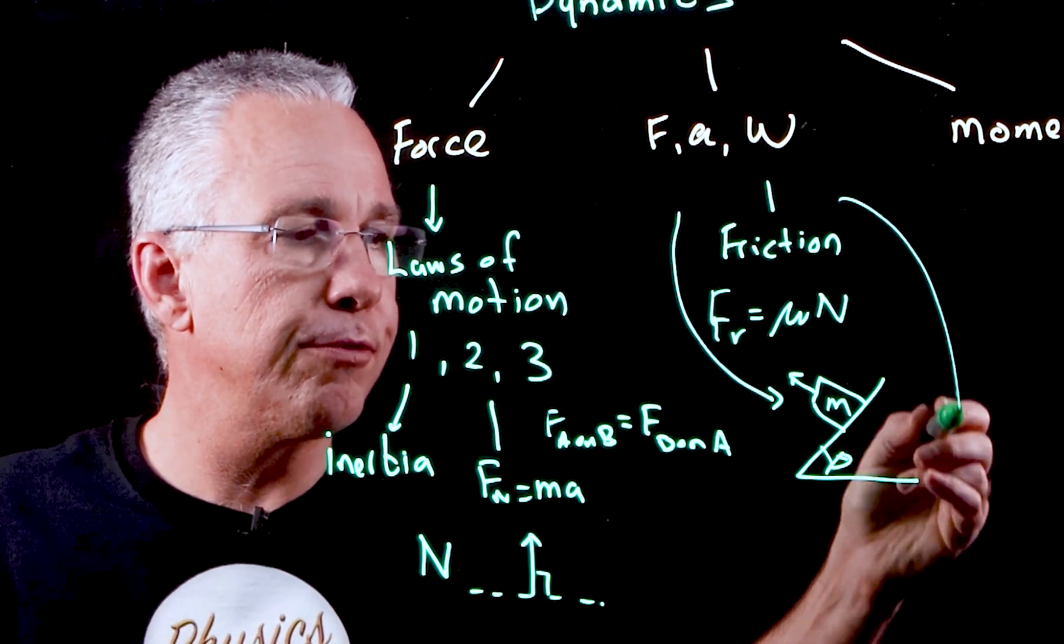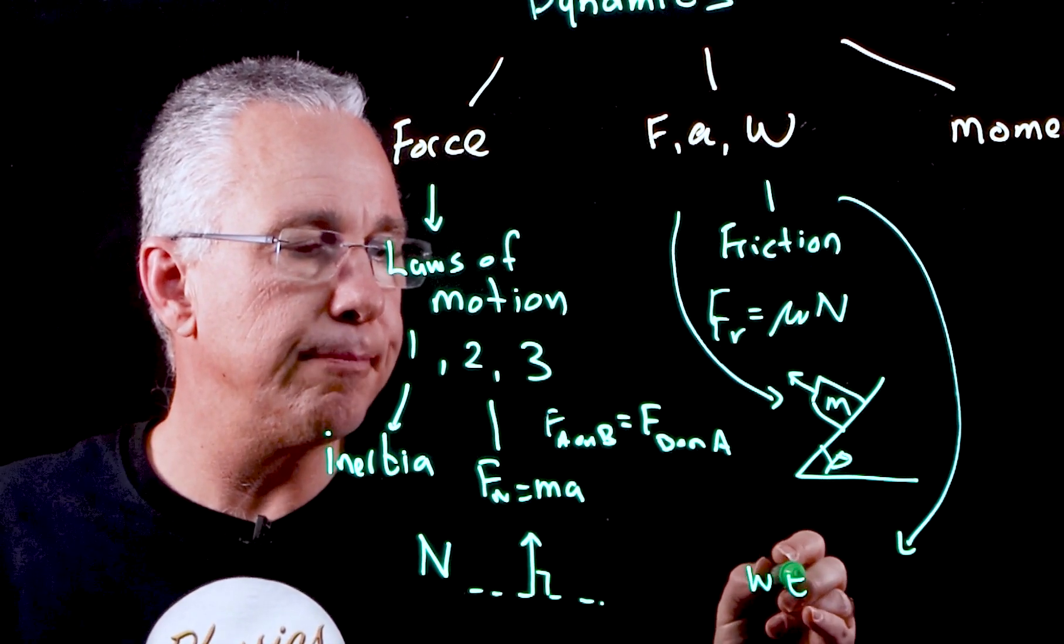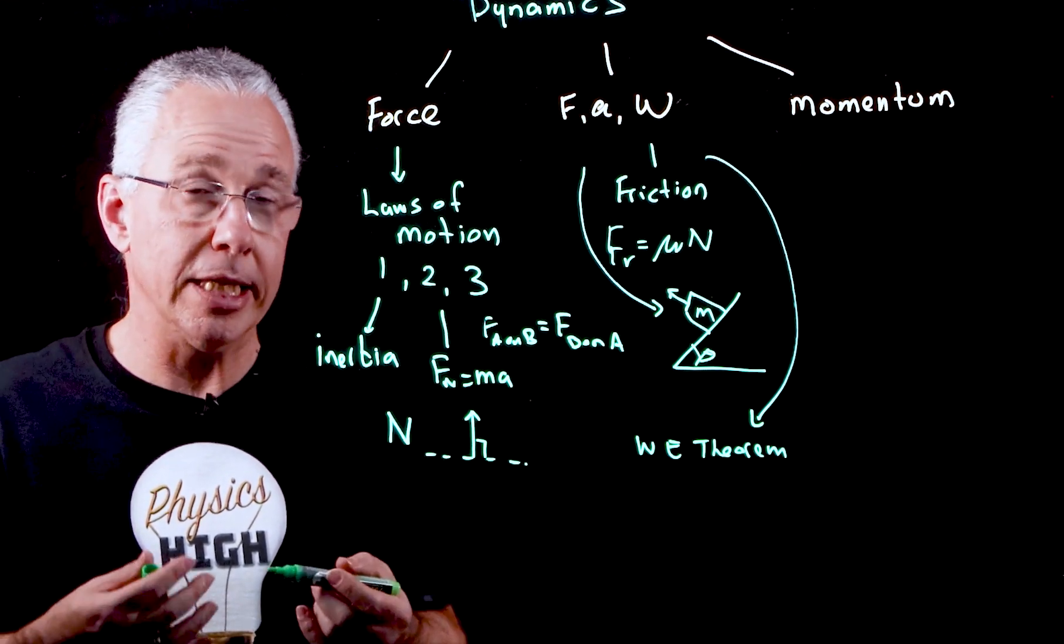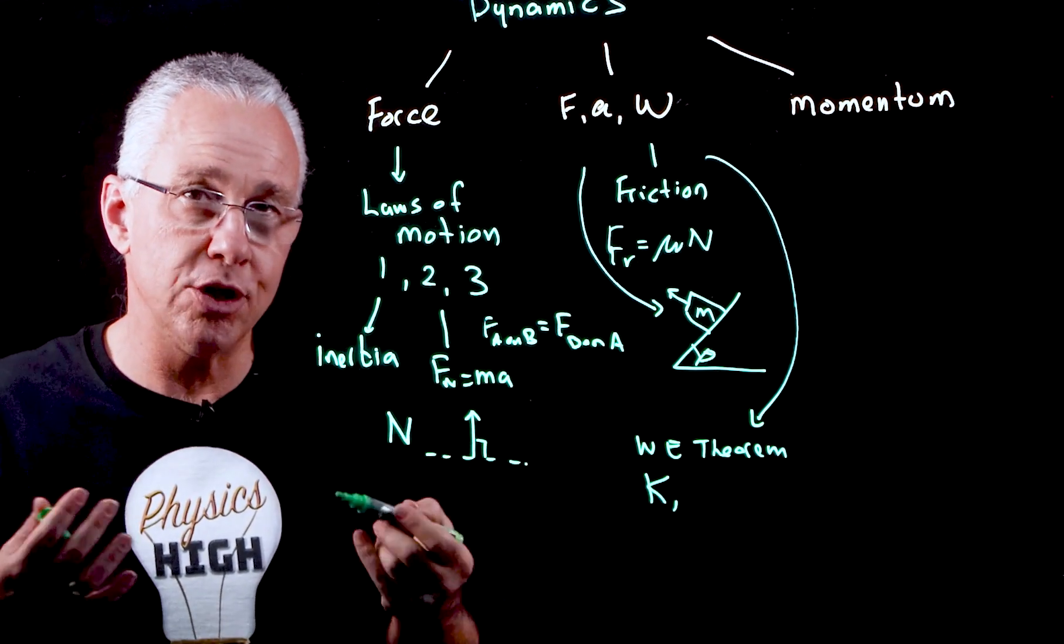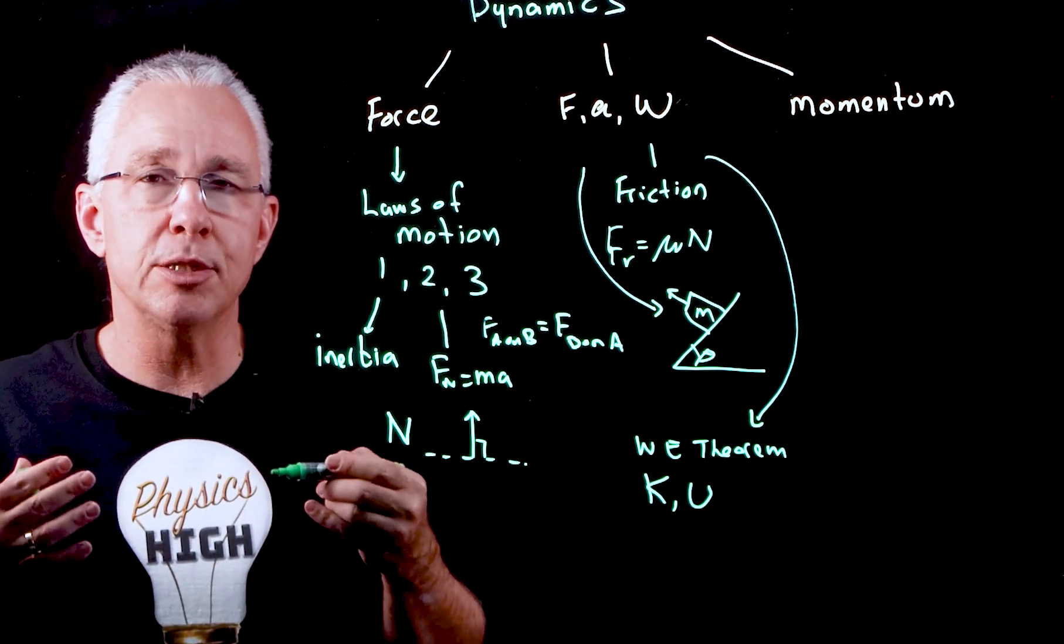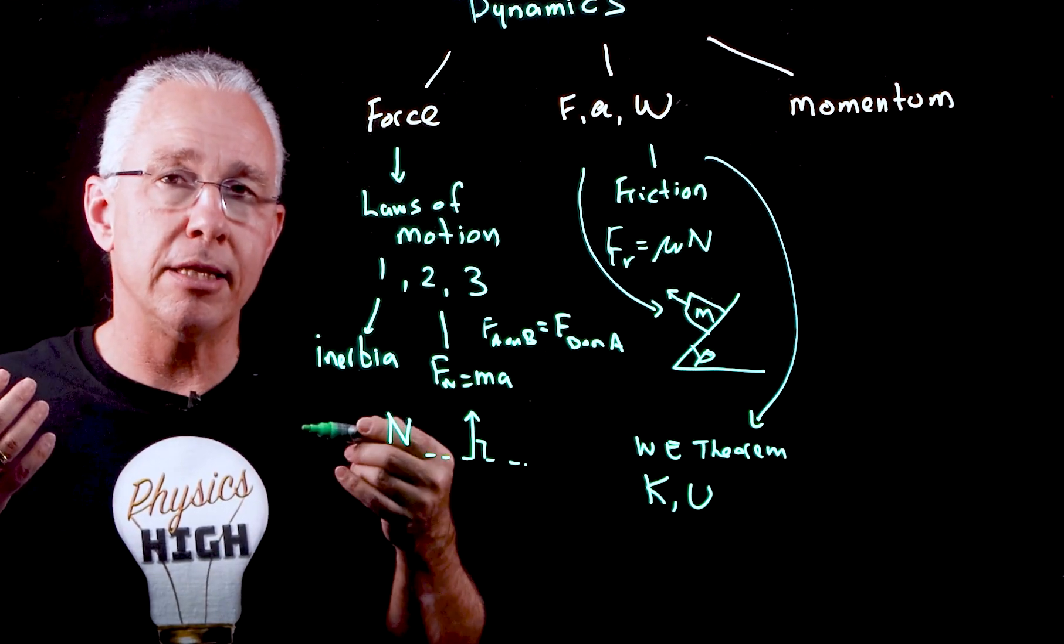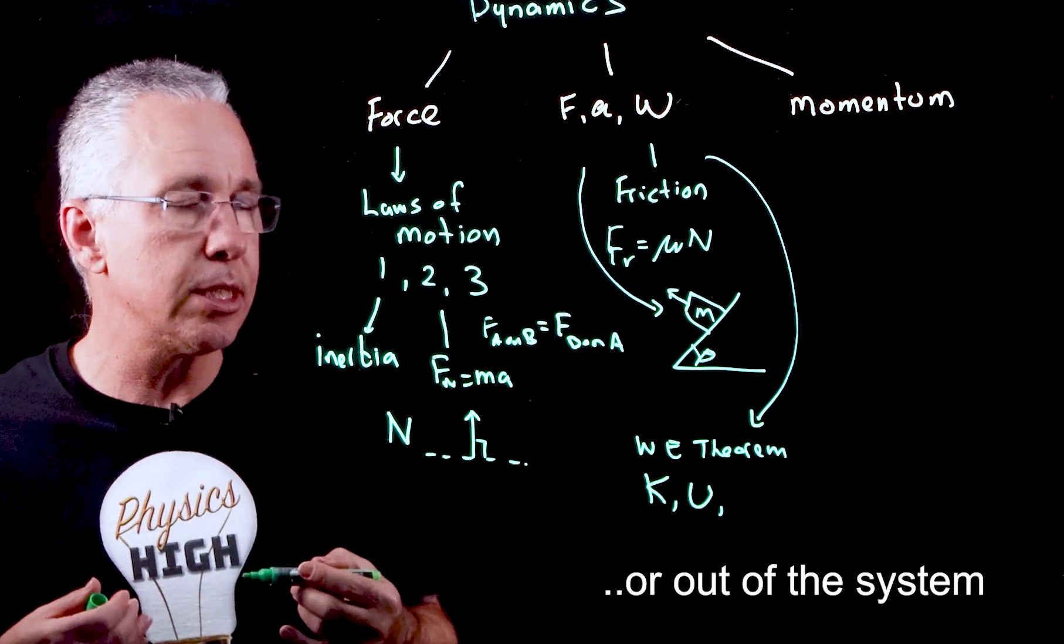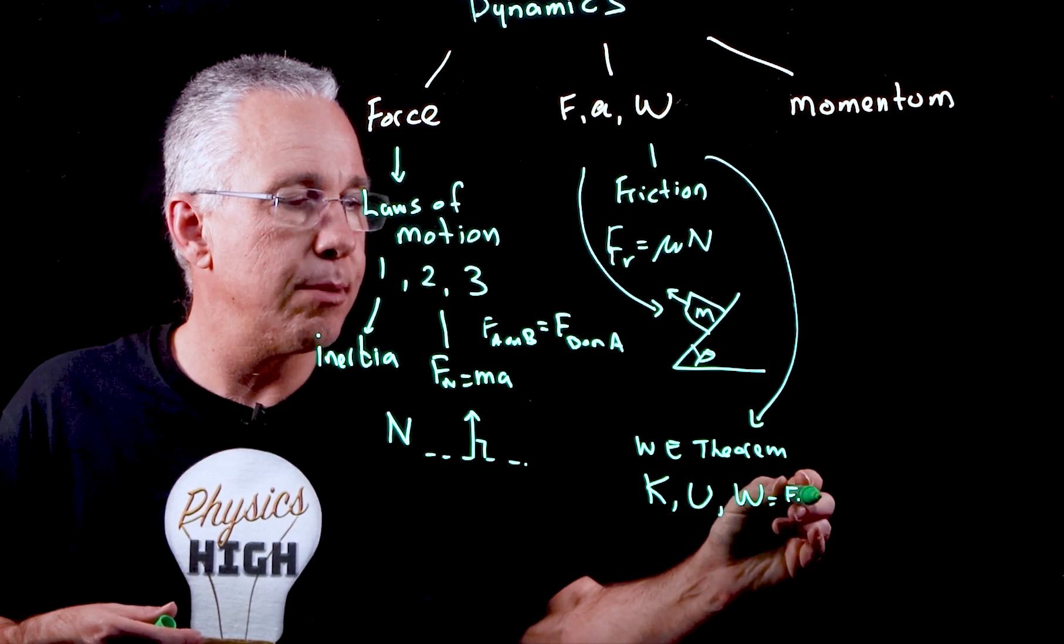But then we follow on from there and we look at what we call the work-energy theorem. Now in essence, what we're talking about really is we're looking at mechanical energy. So we're looking at kinetic energy—the fact that an object has energy due to its motion. We have the gravitational potential energy where we're dealing with objects by way of its position within a gravitational field in this case. And then we also have the concept of work, where we put energy into the system. And so we have work, which is equal to force times displacement.